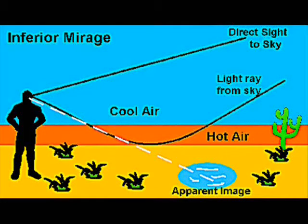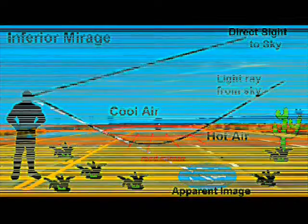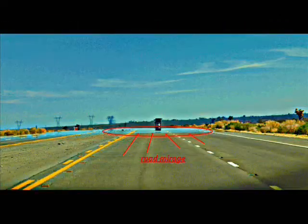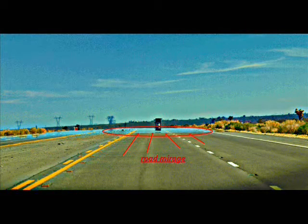This gradient makes a virtual image of the sky appear at or below the road level, and air currents make it shimmer, similar to the reflection of sky on water.